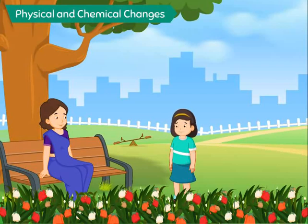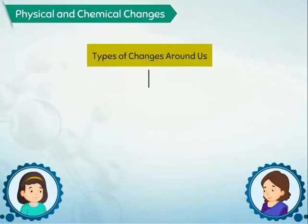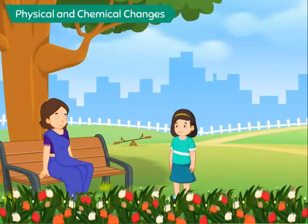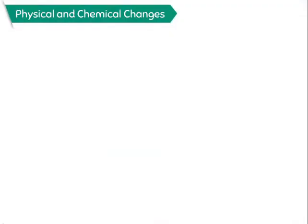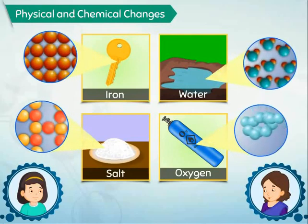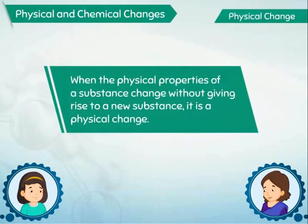Oh, how, Aunty? What is a chemical change? All the changes that take place in our surroundings are either physical or chemical changes. Different substances around us are made of different types of molecules having different physical and chemical properties. When the physical properties of a substance change without giving rise to a new substance, it is a physical change.